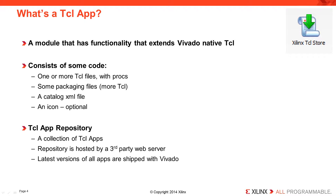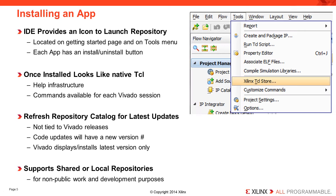The Tcl app repository is a collection of applications. These apps are installed individually and each may contain many Tcl commands implemented using procs. The repository is hosted on a third-party web server called GitHub. Additionally, we ship the latest version of all current apps with every Vivado release, so there's really no need to have internet access if you wish to install and utilize these apps. Vivado provides a repository viewer accessed from an icon on the Getting Started page, or by going to the Tools menu and selecting Xilinx Tcl Store. I'll show a more detailed view of the repository on the next slide.